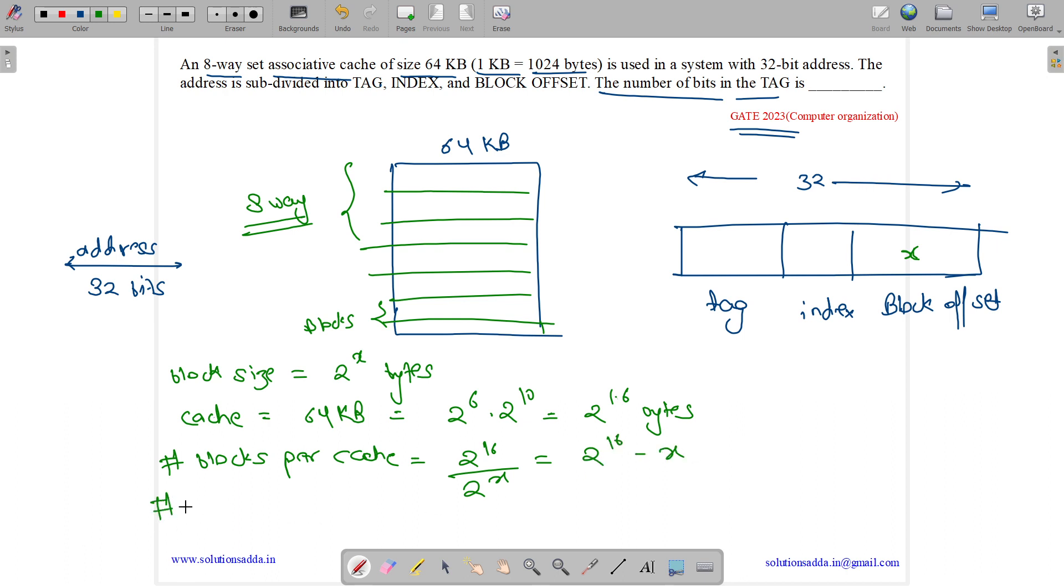Now we will see number of sets. How many blocks? 8 blocks, which is equal to 2 to the power 3 blocks combined to form one set. So how many sets will be there? 2 to the power 16 minus X divided by 2 to the power 3, which is equal to 2 to the power 13 minus X sets.